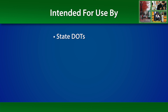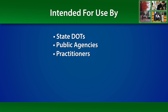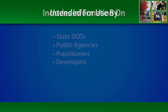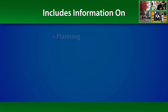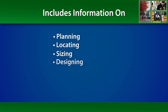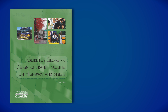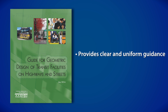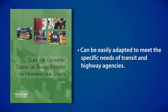The Transit Design Guide is intended for use by State Departments of Transportation, public agencies, practitioners, and developers who are in need of information and guidance on planning, locating, sizing, designing, and implementing transit facilities. This publication provides clear and uniform guidance for the design and placement of facilities and related amenities, and can be easily adapted to meet the specific needs of transit and highway agencies.